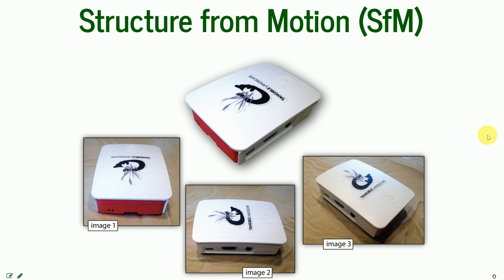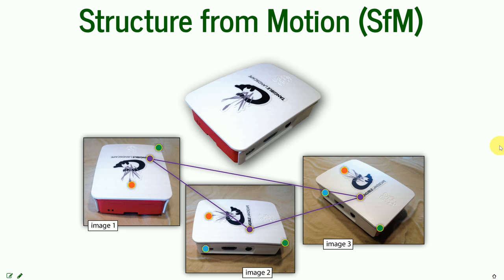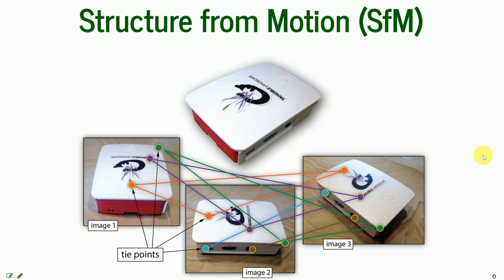Here you have three photographs of the same item. Structure from motion first identifies distinguishable points that can also be recognized in the other pictures — the same exact spot on multiple pictures. Then it matches them together and finds many tie points. Here I showed you just a couple of points, but actually there are hundreds, thousands, and sometimes millions of tie points that structure from motion recognizes.